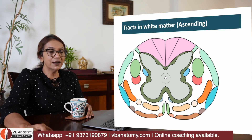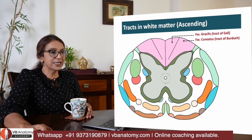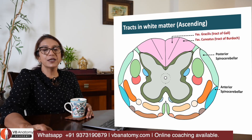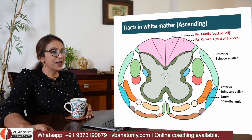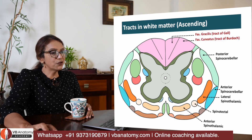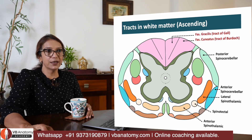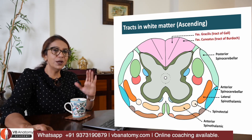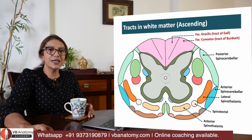Accordingly, there are a number of ascending tracts carrying this information to your cortex. They are fasciculus gracilis and cuneatus, anterior and posterior spinocerebellar, anterior and lateral spinothalamic, and spinotectal. Is that all? That's all — are those the seven ascending tracts?